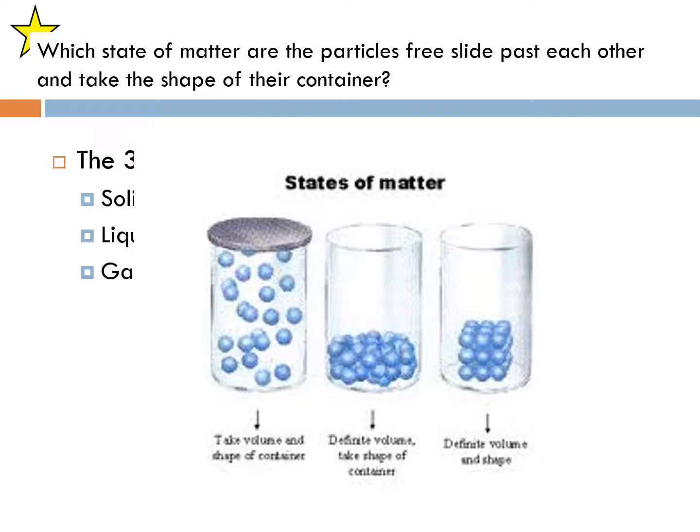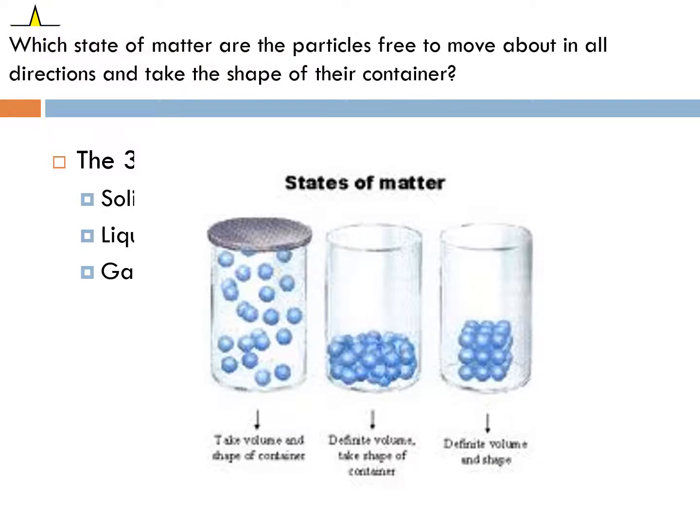In which state of matter are particles free to slide past each other and take the shape of that container? If they're free to slide past each other you're going to say liquid, because they're sliding past. Gases have more empty space, they're not as likely to slide past each other. In which state of matter are particles free to move about in all directions and take the shape of that container? That is your gas phase. Gases are going to move in all directions no matter what shape you have or what container you have.